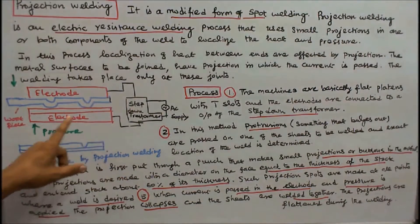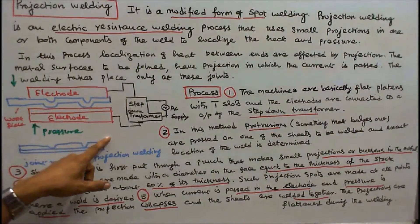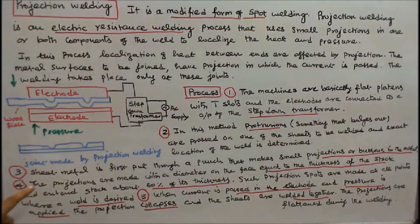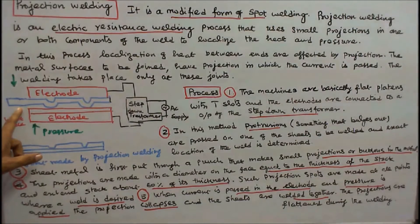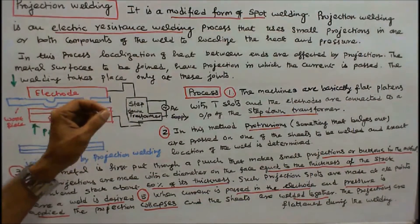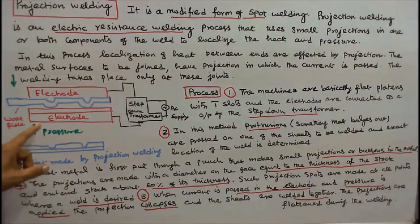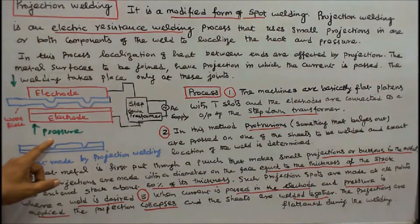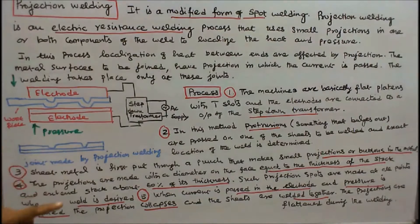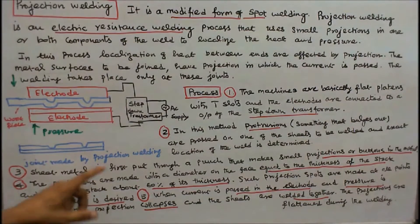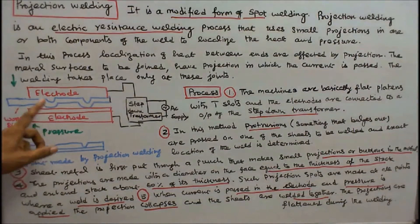And the exact location of the weld is determined. Number 3: Sheet metal is first put through a punch that makes small projections or buttons in the metal. Number 4: The projections are made with the diameter on the face equal to the thickness of the stock and extend the stock about 60% of its thickness.